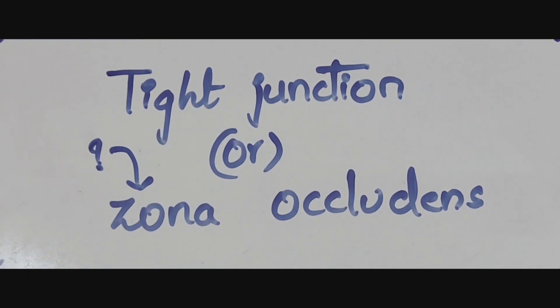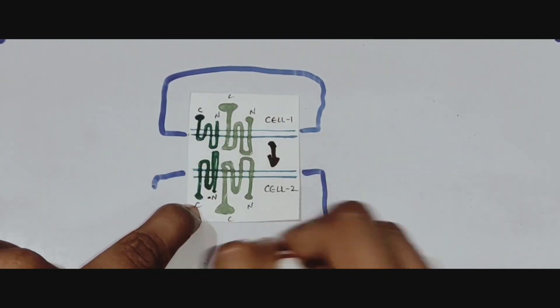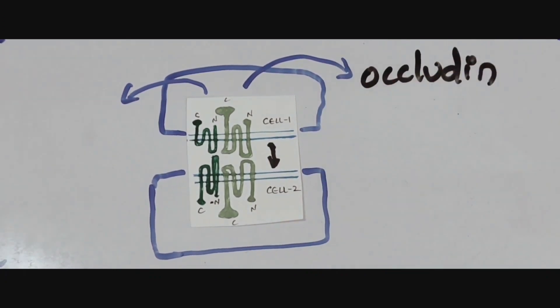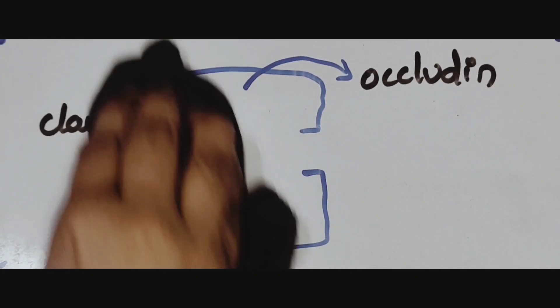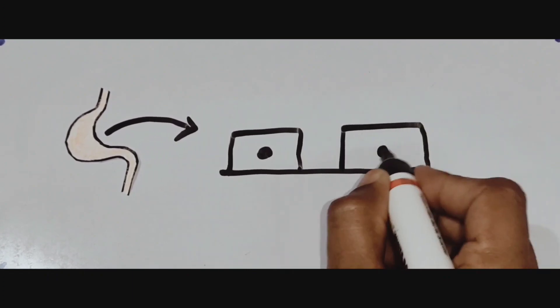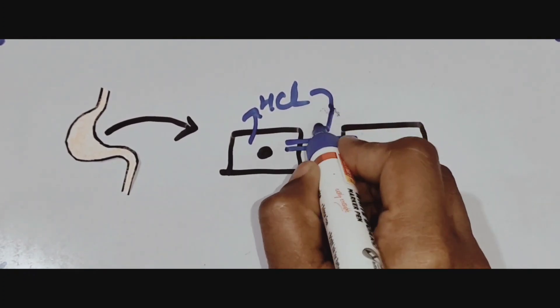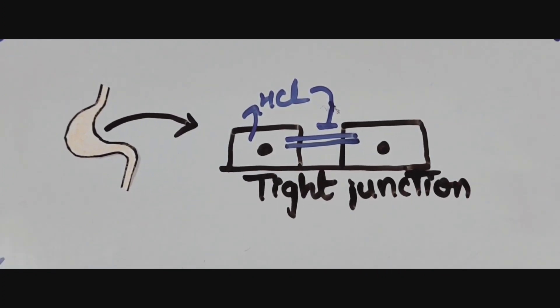To understand why it is called zona occludens, let us look at its structure. Imagine two cells arranged adjacent to each other. There are two proteins associated with their membranes: one is called occludin and the other is claudin. Since it includes occludin, the terminology is similar. These two proteins are associated with the tight junction. A classic example is the epithelial layer of the stomach, which releases HCl. If this HCl were to leak into the spaces, it would destroy the lining — tight junctions prevent that.